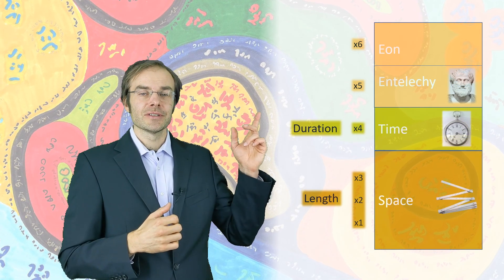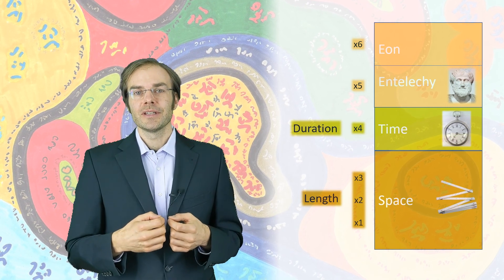A term that was used by Aristotle already, so it's been in philosophy for way over 2000 years. And the sixth dimension he called the Eon, which means the age of the world.